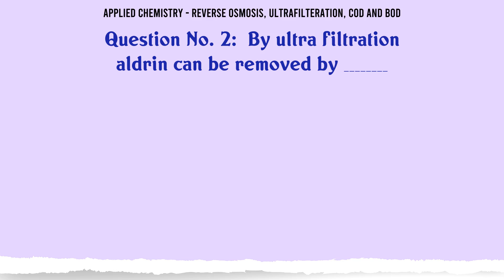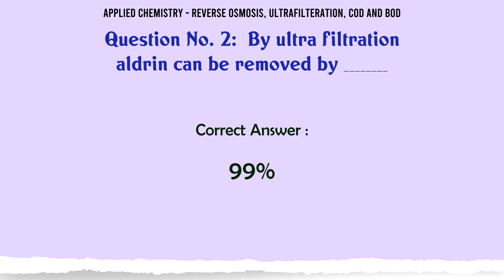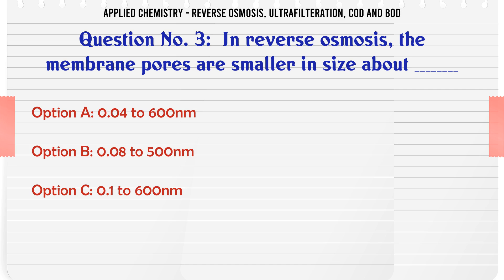By ultrafiltration, alderine can be removed by: a) 100, b) 99, c) 98, d) 97. The correct answer is 99.